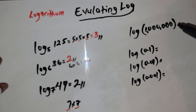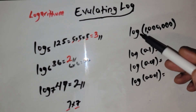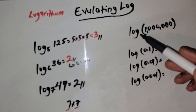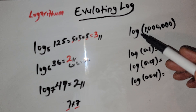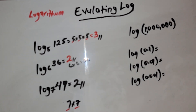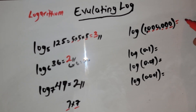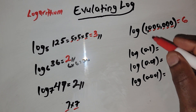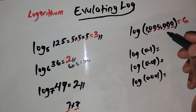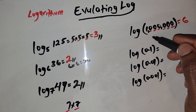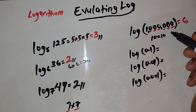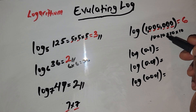Let's do a bigger number. We don't have a base here, so whenever you don't see a base it is assumed to be 10 — log base 10. For this I just want you to count the zeros: 1, 2, 3, 4, 5, 6 — six zeros. So the answer is 6, because 10 raised to the sixth power is equal to one million.